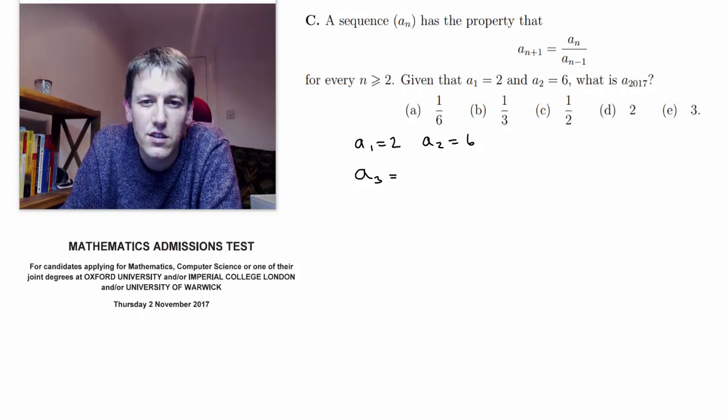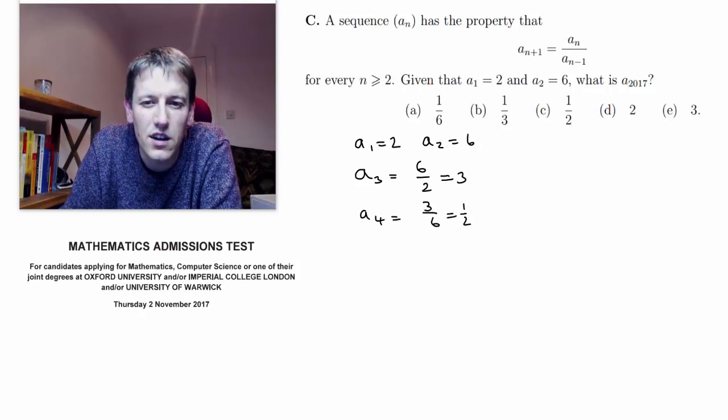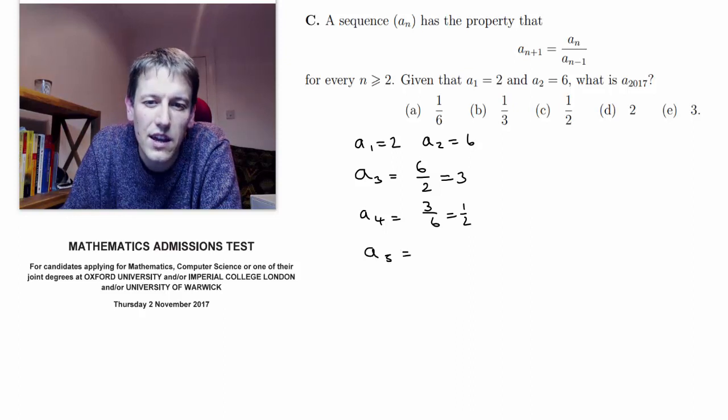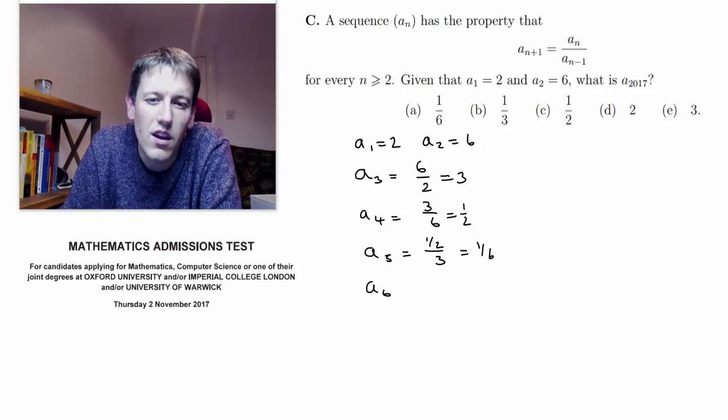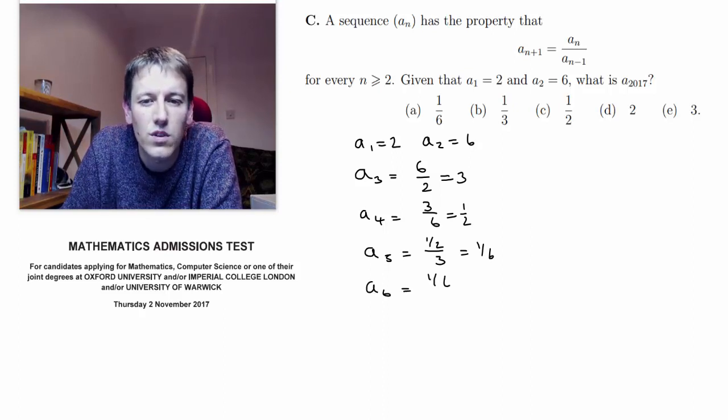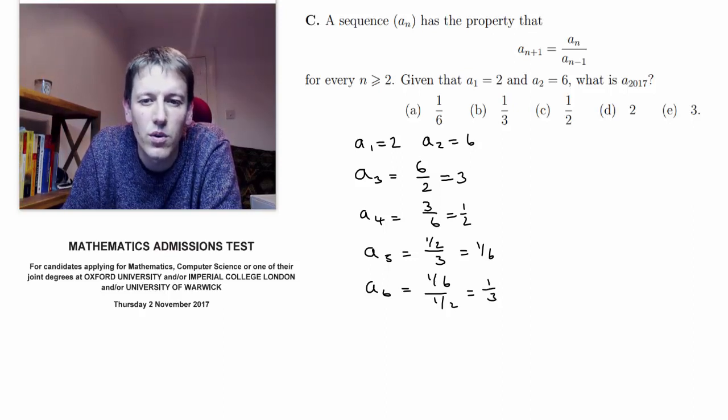a3 is a2 divided by a1, so that's 6 over 2, which is 3. The fourth term is 3 divided by 6, that's one half. a5 is one half divided by 3, which is one sixth. a6 is one sixth divided by one half, which is one sixth times 2, so that's one third.